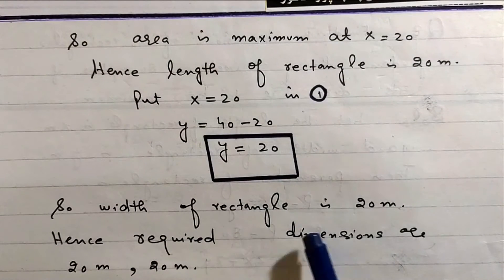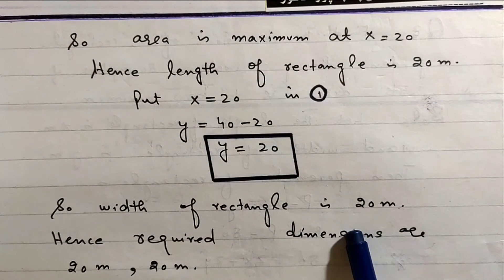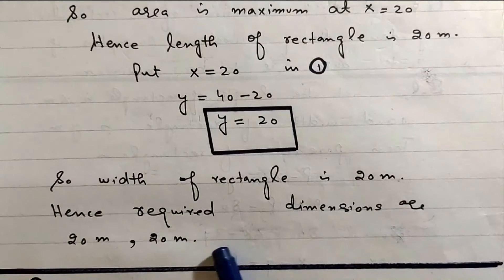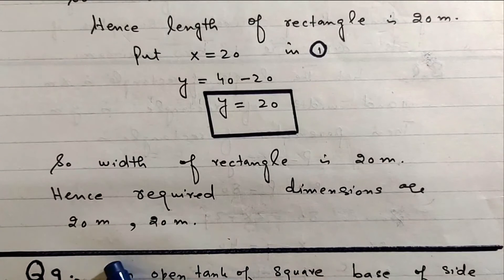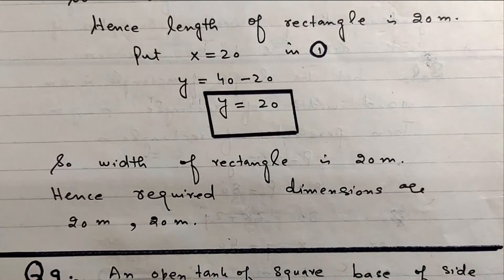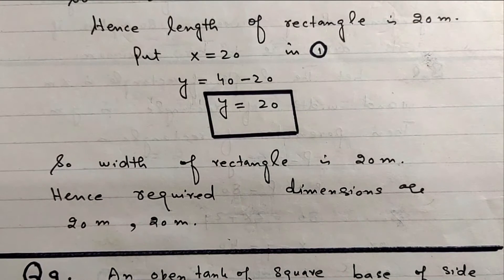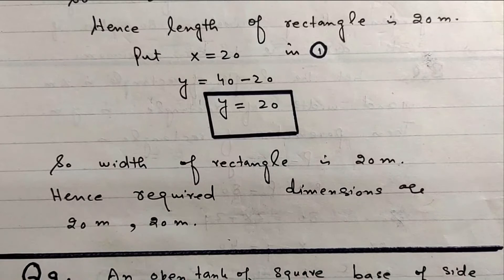Putting x equals 20, we get y equals 20. So the width of the rectangle is 20 meters. Hence the required dimensions are 20 meters by 20 meters.